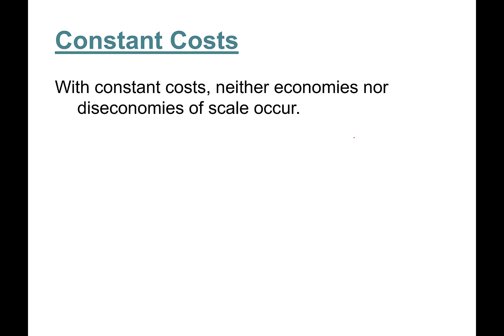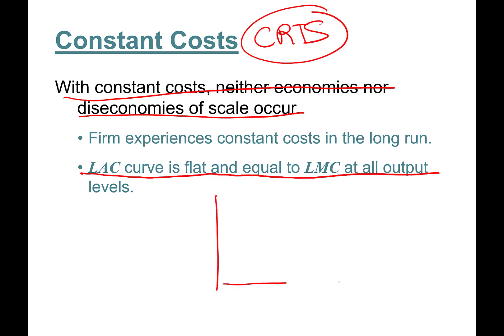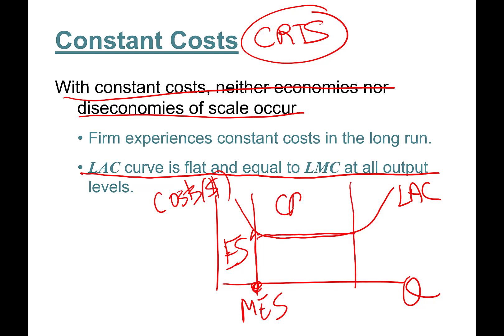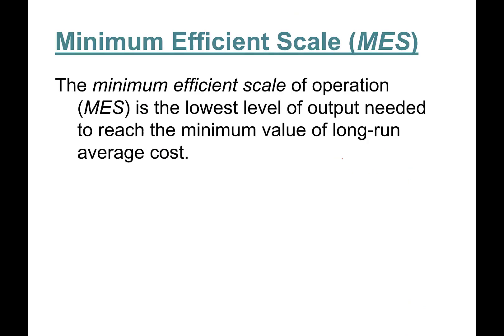Constant cost—this is constant returns to scale. With constant cost, neither economies nor diseconomies of scale occurs. The firm experiences constant cost in the long run. So long-run average cost curve is flat and equal to long-run marginal cost curve at all output levels. This is economies of scale, minimum efficient scale is at this point. Here you have constant returns to scale, and this is diseconomies of scale. The special case of constant cost: marginal cost and average cost are equal to each other.